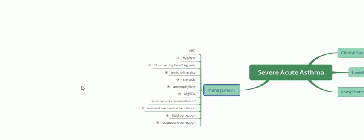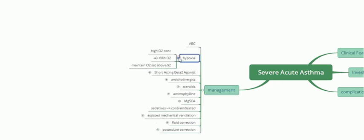To treat hypoxia, we give high concentration oxygen. Unlike in COPD, we do not worry about carbon dioxide retention — in severe acute asthma we can give high concentration oxygen, typically 40 to 60%, which maintains oxygen saturation above 92% as measured by pulse oximetry.